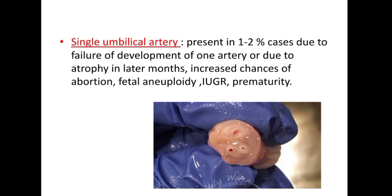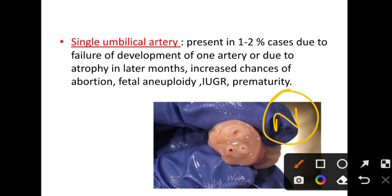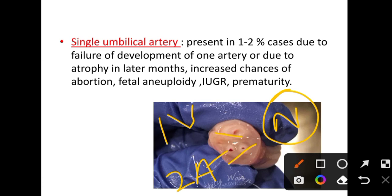Normally the umbilical cord has two arteries and one vein. A disorder called single umbilical artery occurs in 1 to 2 percent of cases, due to failure of development of one artery or atrophy in later months. This is associated with increased chances of abortion, fetal aneuploidy, IUGR, and prematurity.